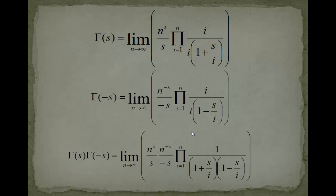We know that both limits are existing, we can take them together and we get n to the s multiplied with n to the minus s over s, over minus s, this is the stuff here. Then we get this product, I cancel the i's out here because we don't need them and here in the denominator we get 1 plus s over i, 1 minus s over i.